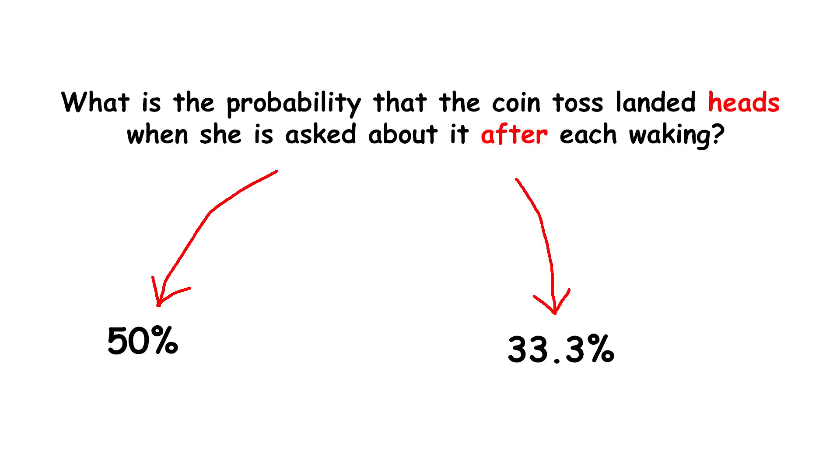Since tails scenarios happen twice as often as heads scenarios, once for Monday and once for Tuesday, the probability should be one thirds.